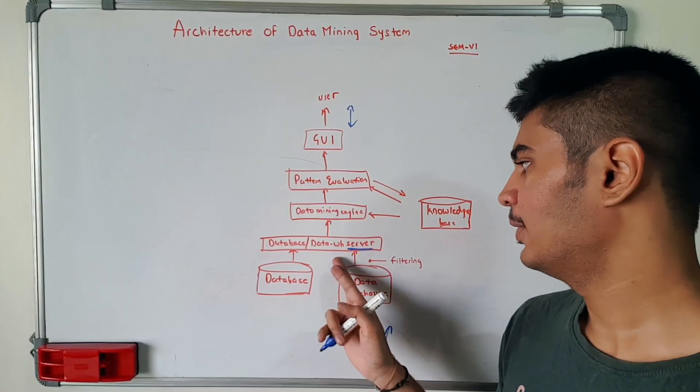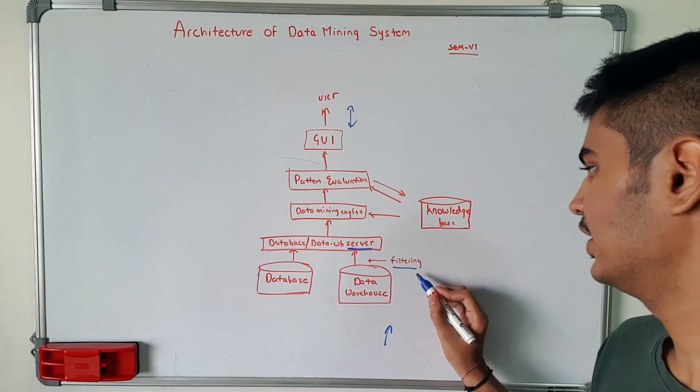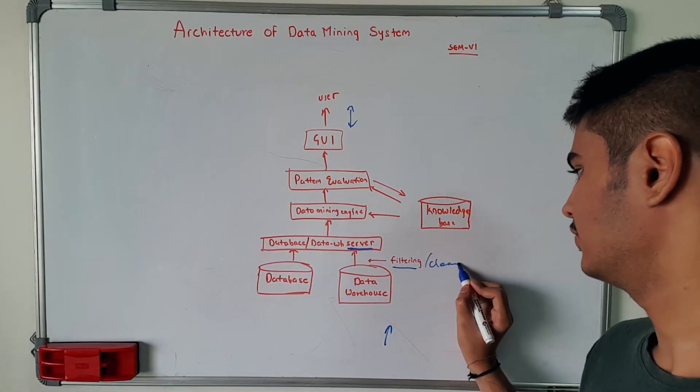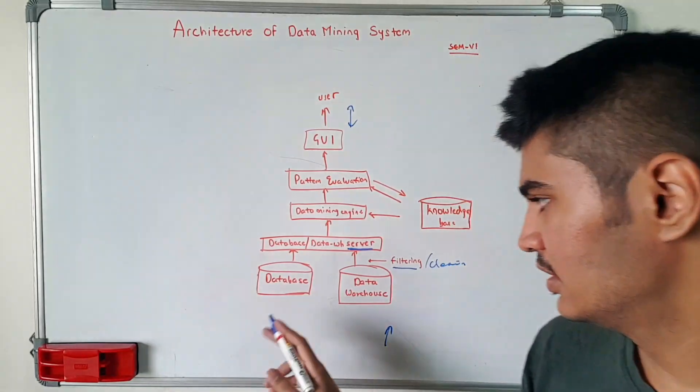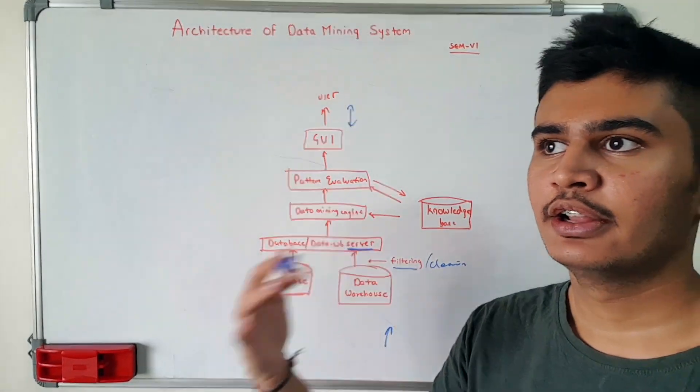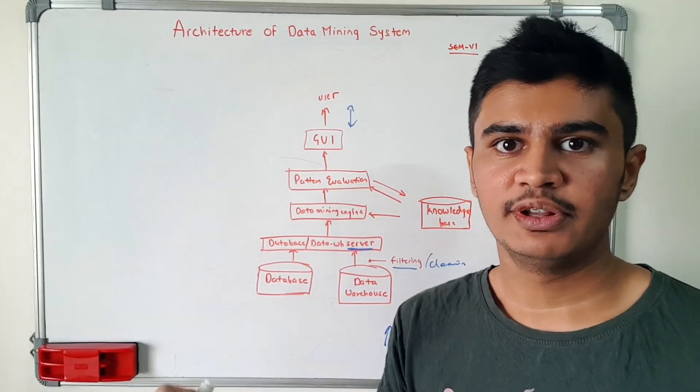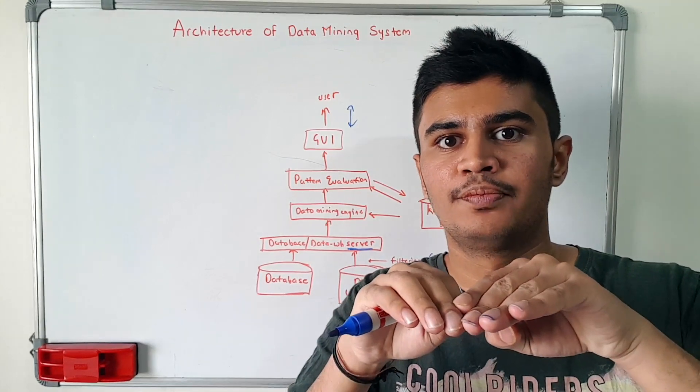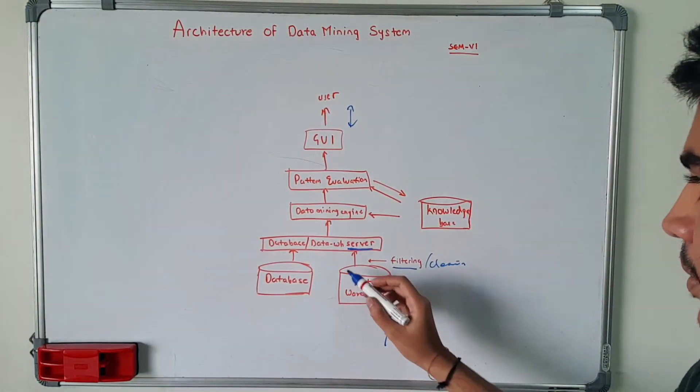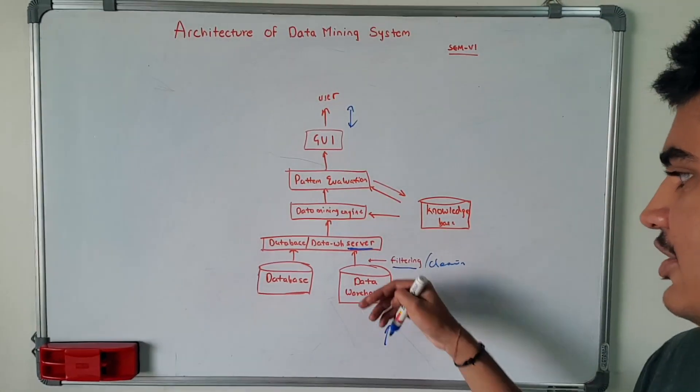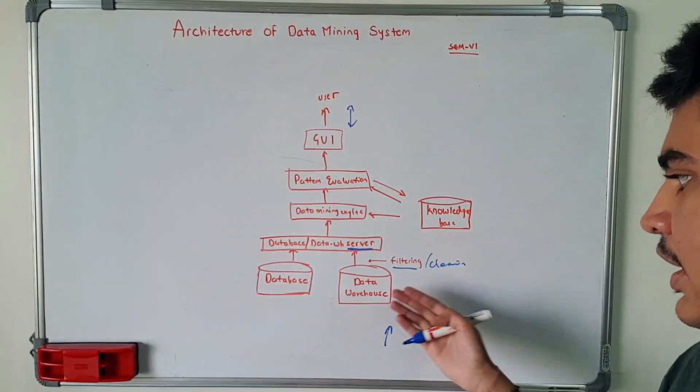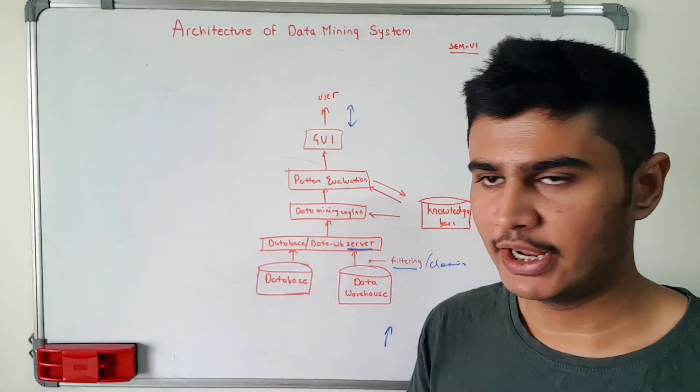And while fetching, the data warehouse server will do data filtering, data cleaning and all that stuff, as you studied in the previous KDD process. Data reduction, data cleaning, all the variables will have same declarations and all that kind of stuff. That will be done already. Then the data warehouse server will fetch the data from the database or data warehouse depending upon where the data is.